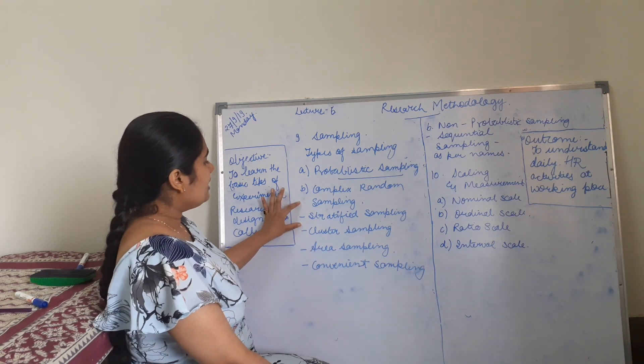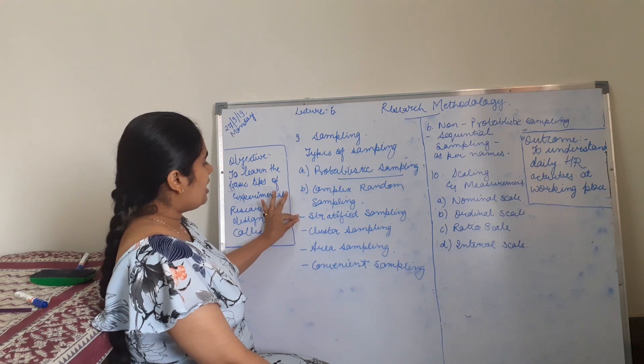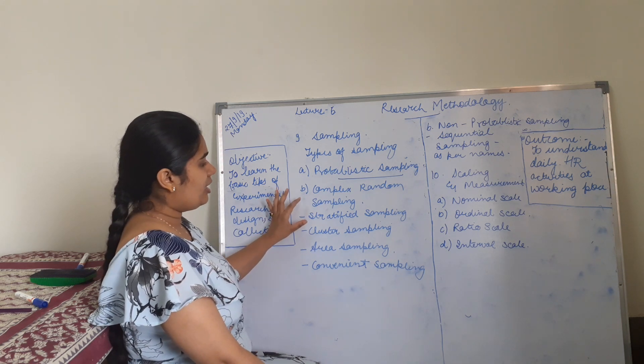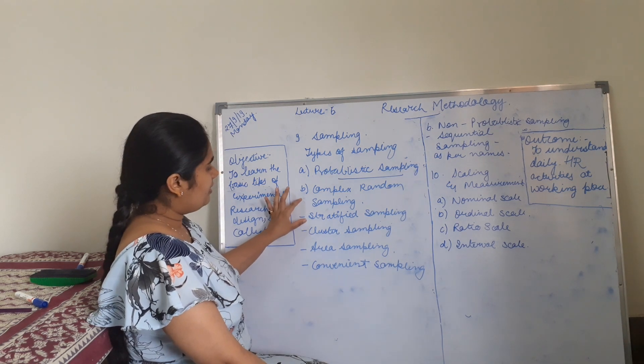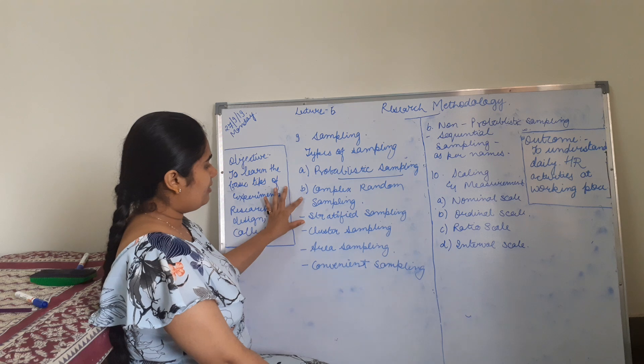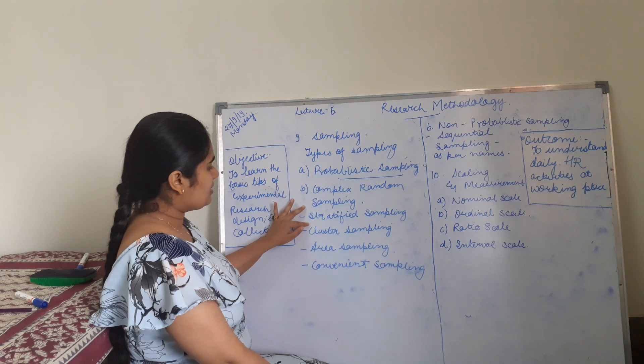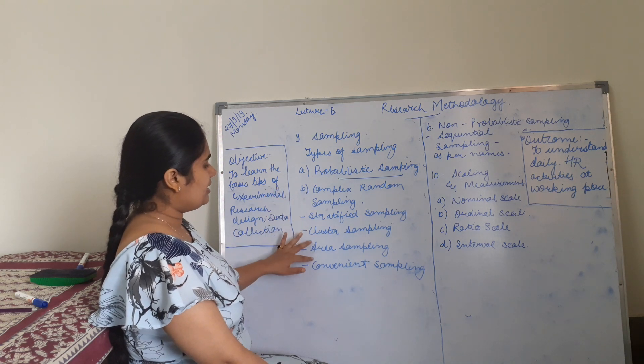In stratified sampling, strata are being divided. For example, strata of men, women, and children — so these are stratas.